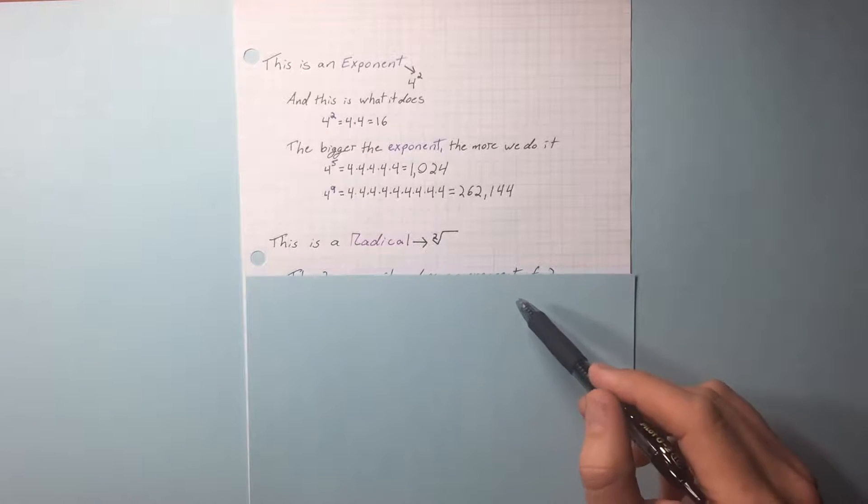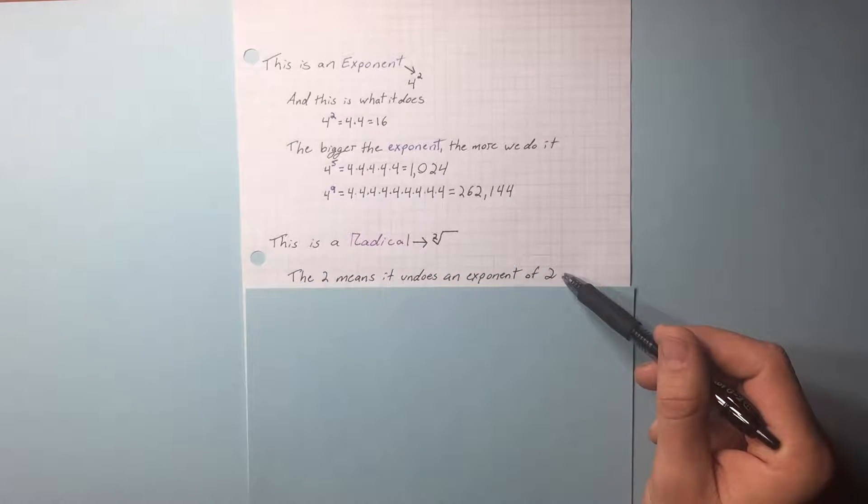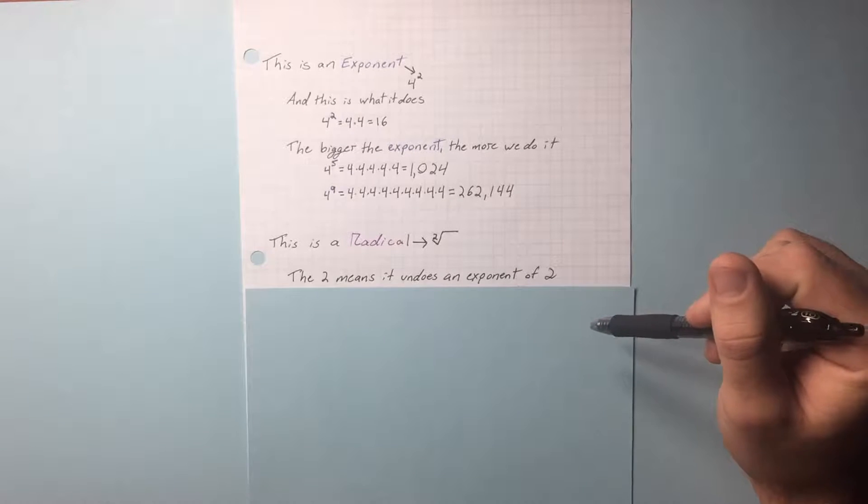This is a radical or a rad. This 2 in here means it undoes an exponent of 2. Radicals and exponents are opposite functions.